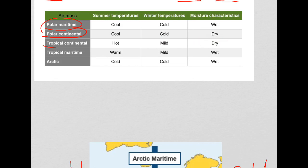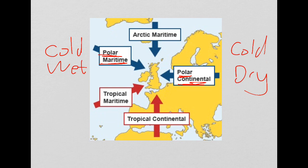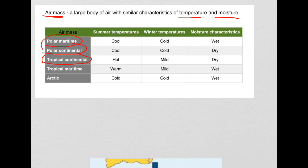The third air mass is tropical continental. Tropical means warm and continental means dry. Looking at the characteristics: hot in summer, mild winter temperatures, and dry throughout the year.